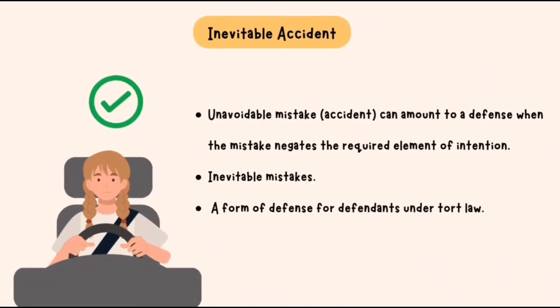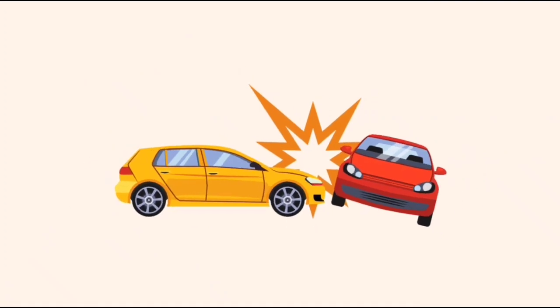Inevitable accident: an unavoidable mistake or accident is a form of defense for defendants under tort law, with no responsibility to the plaintiff, on the condition that the accident or mistake was acute and unintentional.